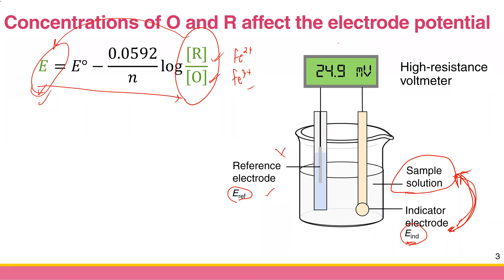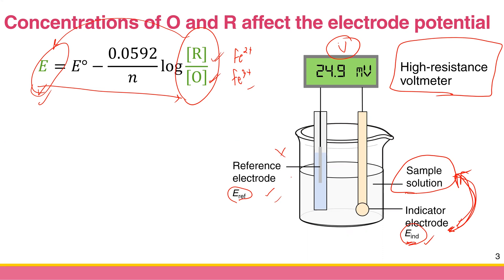To measure the potential difference, we need a high-resistance voltmeter. The voltmeter measures the potential difference between the indicator electrode and the reference electrode.